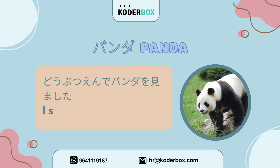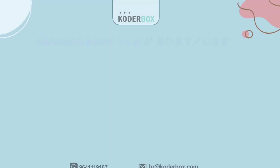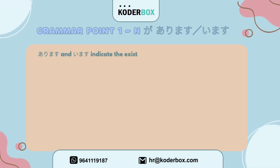Tenth, panda — Panda. Doubutsuen de panda wo mimashita. I saw pandas at the zoo. Grammar point one: ga arimasu / imasu.